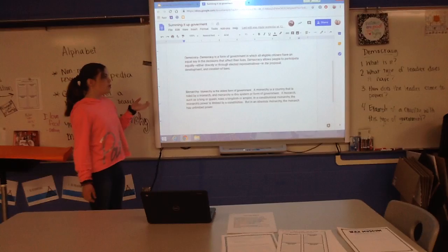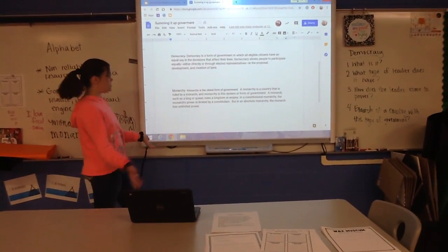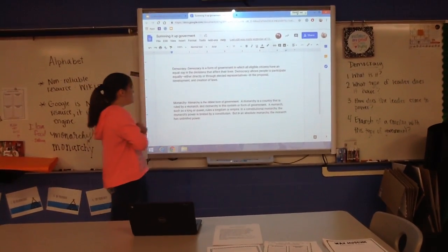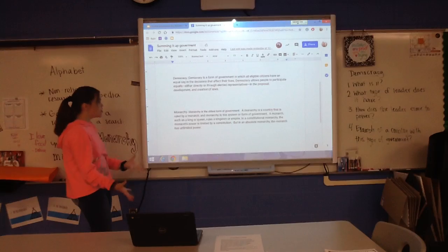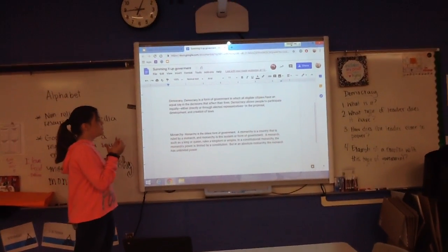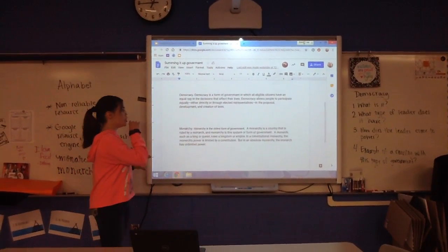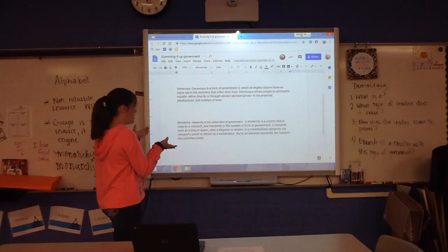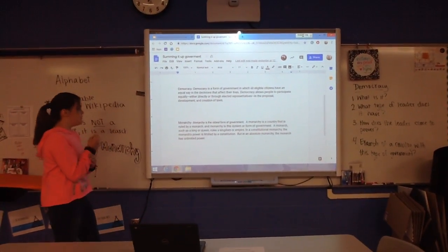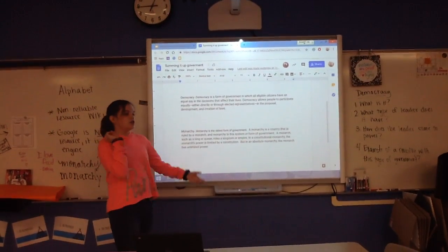Democracy. Democracy is a form of government in which all eligible citizens, like we said in the last Google Slides, have an equal say in the decisions that affect their lives. So democracy allows people to participate equally, either directly or through elected representatives, in the provisional development and creation of laws, which means they're all treated equally.